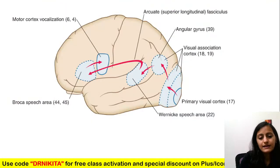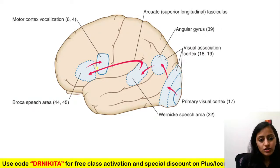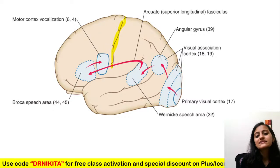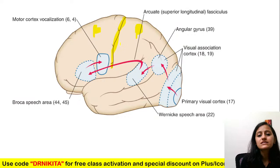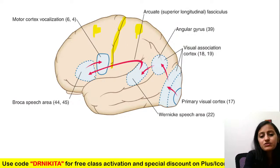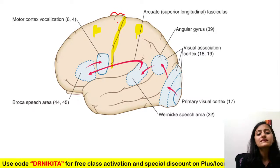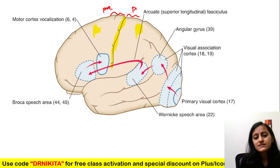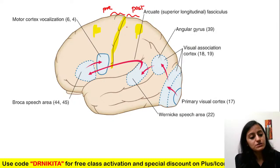Let me show you that table. Here is the central sulcus — it separates the frontal from the parietal lobe. The pre-central gyrus is the motor area. What is there in the pre-central and post-central areas? Which is sensory and which is motor?